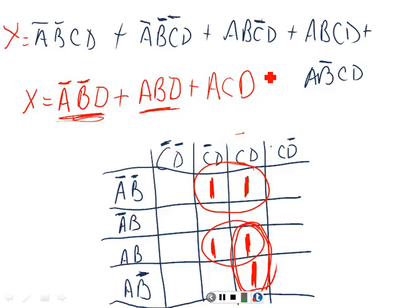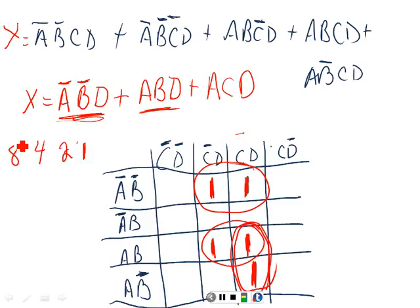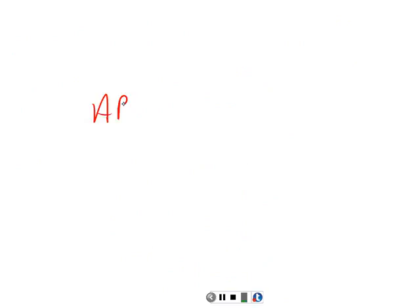Here's the key rule: you can only circle twos, fours, eights, and sixteens — not threes, not sixes. A six would actually be treated as two separate groups of two or four. Also remember the map folds both top-to-bottom and side-to-side, so corners can match up. If you've got ones in all four corners, they all match and form a group.